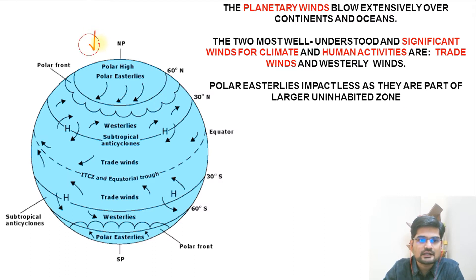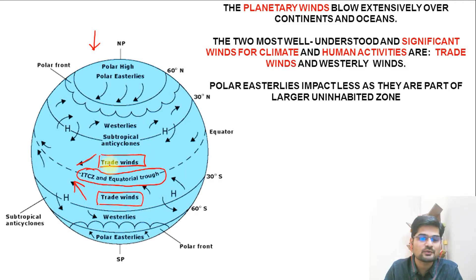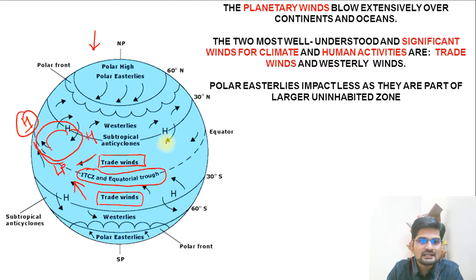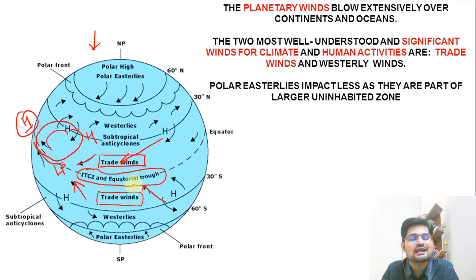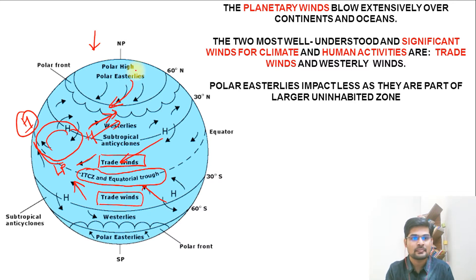Looking at this image, we see the intertropical convergence zone — the equatorial trough area. Trade winds come towards it from both sides, from both hemispheres. They used to facilitate trade, which is why they were named trade winds. This is a low pressure zone where winds rise, and the subtropical high is where they subside — this is the Hadley cell cycle. Trade winds come from the northeast in the northern hemisphere and southeast in the southern hemisphere. Then we have westerlies blowing west to east, and polar easterlies blowing east to west.